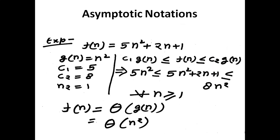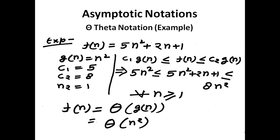Let us understand Theta notation with an example. Take the same function f(n) = 5n² + 2n + 1, which represents the execution time of our algorithm. Let g(n) = n², c₁ = 5, c₂ = 8, and n₀ = 1.